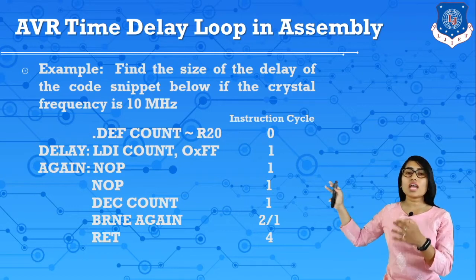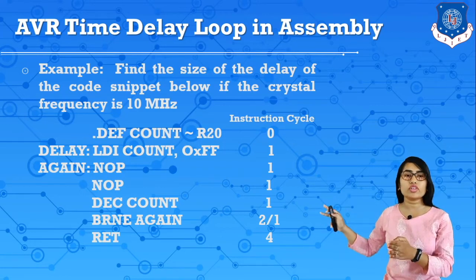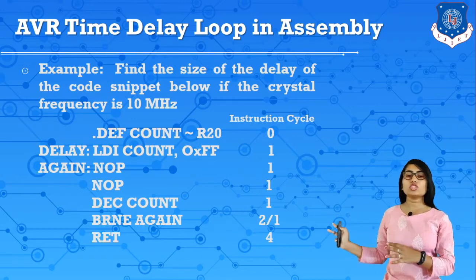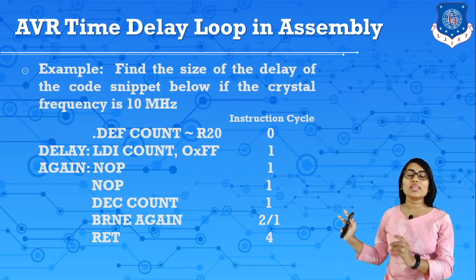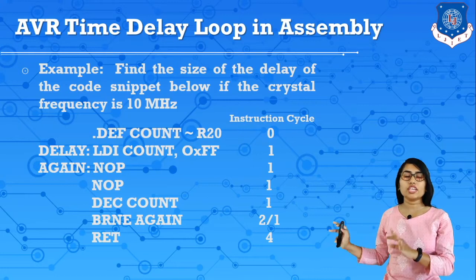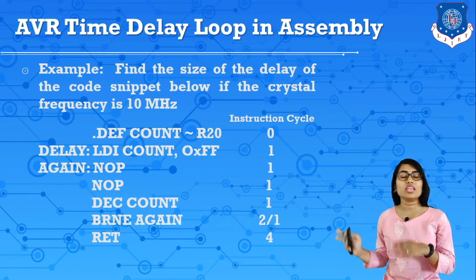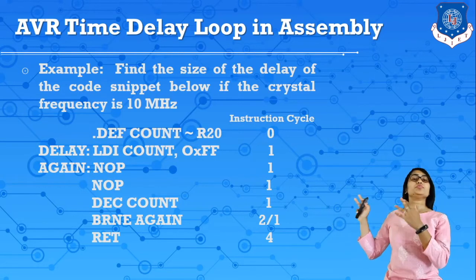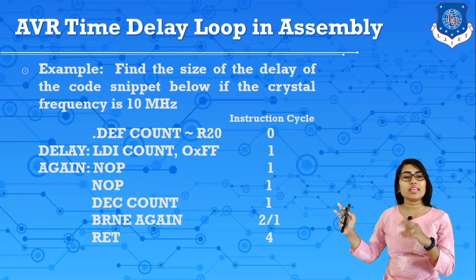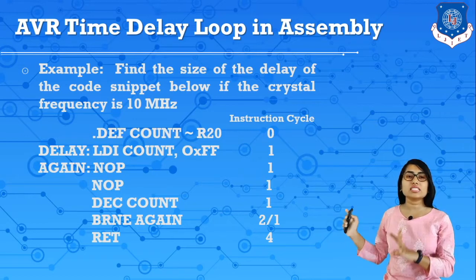In this program, R20 is loaded with 0xFF, which is 255. Then no operations execute, 255 is decremented to 254, and BRNE jumps back to the 'again' label until R20 equals 0. It jumps repeatedly until R20 becomes 0, executing the loop 255 times. Once R20 reaches 0 it returns to the main program. This is a simple time delay loop — with just 3 or 4 instructions it decrements and checks if the data is zero using BRNE, jumping over the label again and again.